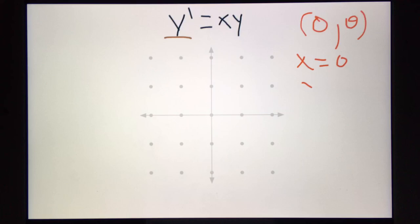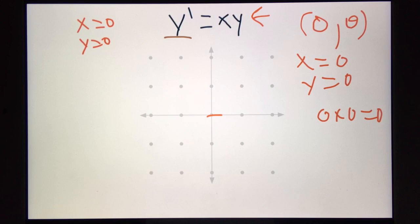Since the x value equals 0, and the y value equals 0, we plug it in here. 0 times 0 equals 0. So the slope would be 0. Now, if you look at this specific derivative, you'll notice that whenever x equals 0 or y equals 0, the derivative or slope will equal 0.